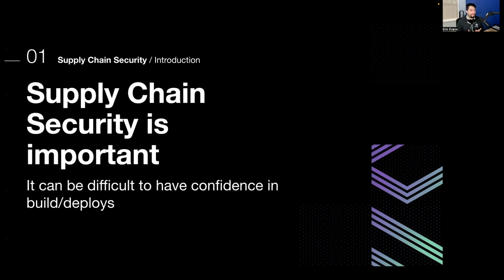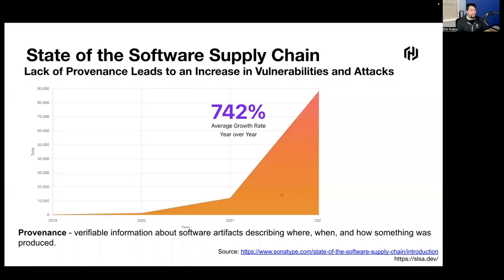To start with, it's important to recognize that supply chain security is important — it's a growing concern. It can be difficult to have confidence in builds and deploys because of the different vectors of attack that can happen throughout a supply chain. There is an average growth rate of 742% per year according to Sonatype. The lack of provenance — that is, the verifiable information about software artifacts describing where, when, and how it was produced — is just lacking.